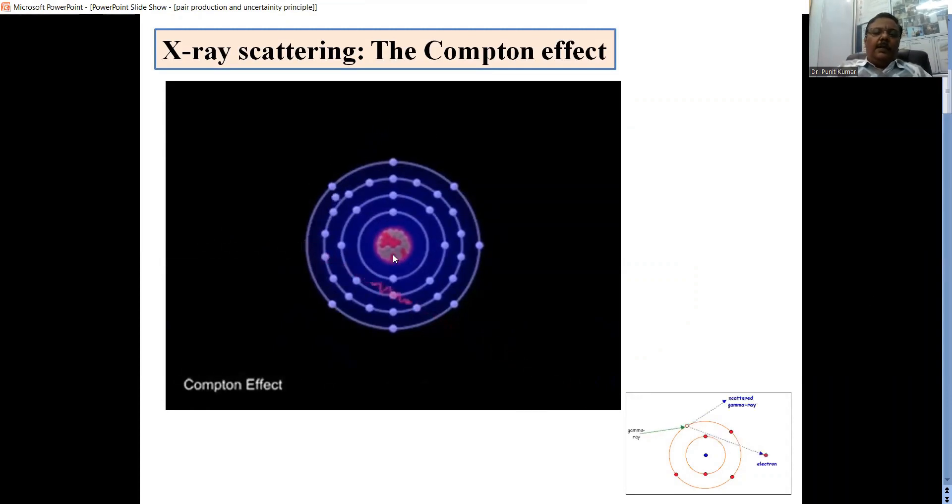There is a central nucleus and electrons are revolving around the nucleus in their orbits. When a photon is incident on this atom and strikes or collides with the electron in the valence shell, it gets scattered.